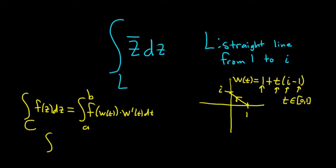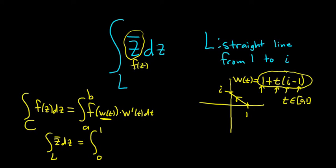So in this problem, it's l, and it's the conjugate of z, dz, and here our a is 0, and our b is 1. So f of w of t, so this is our w of t, right, so you just plug it in here. This is our f of z. So it's just going to be the conjugate of 1 plus, I'm going to go ahead and distribute the t here. So it'll be ti minus t times the derivative.